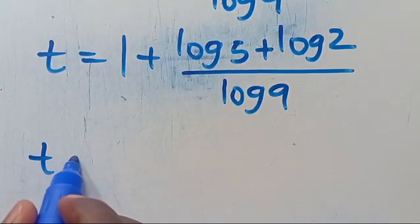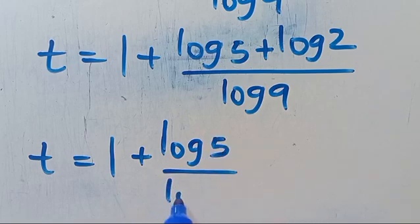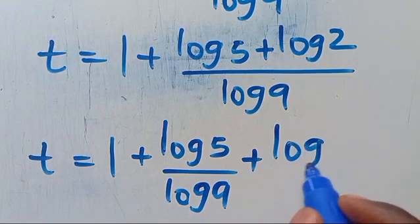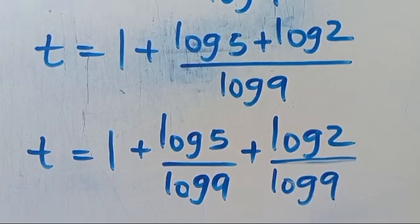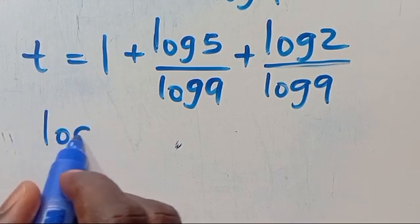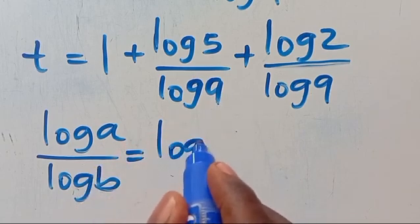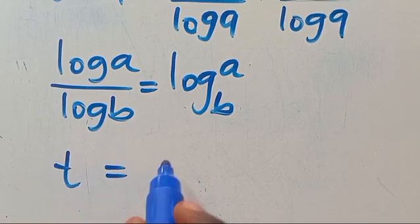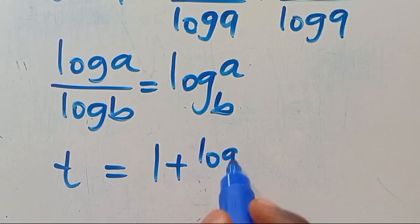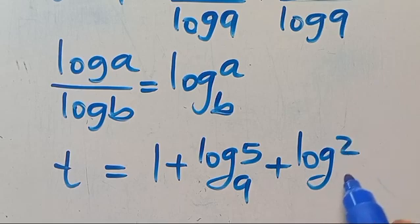So we can also write this as t equals 1 plus log 5 divided by log 9 plus log 2 divided by log 9. Recall that log a divided by log b equals log of a in base b. Therefore, t equals 1 plus log 5 in base 9 plus log 2 in base 9.